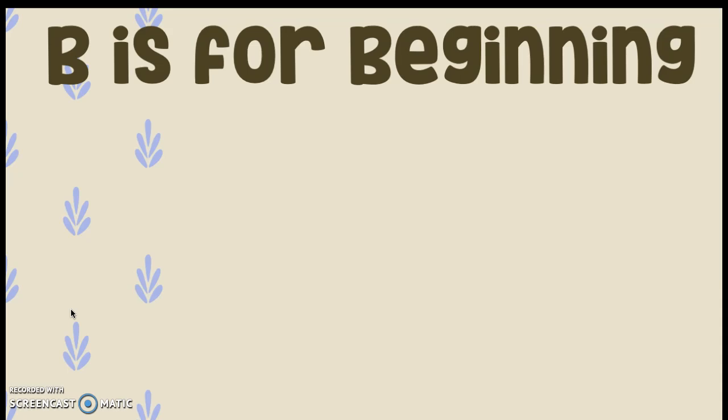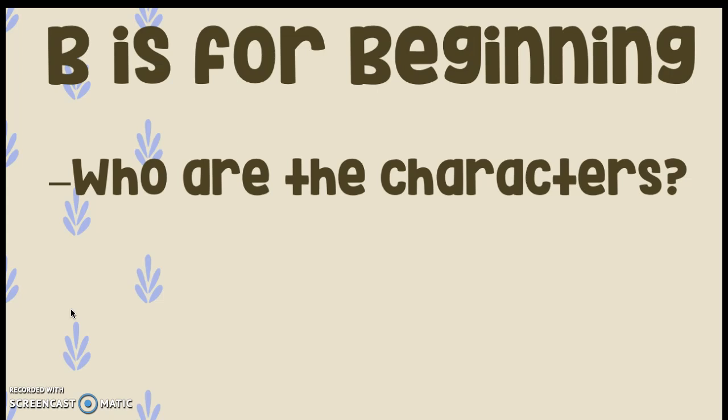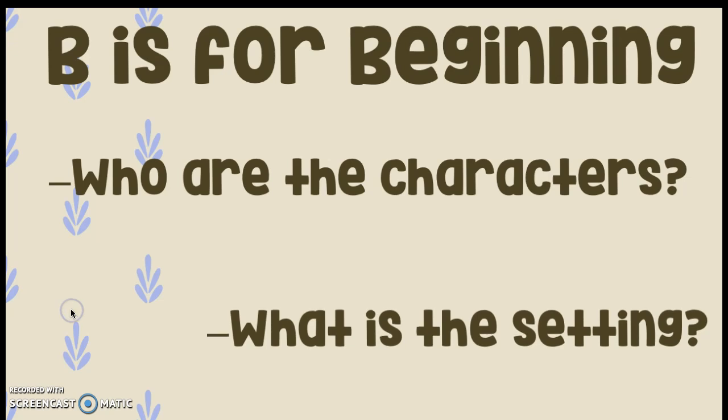B is for the beginning. The beginning of a story is really important — it does two things. It tells you who the characters are. When you first start reading a story, you don't know who's going to be in the book, so the beginning introduces the characters for the very first time. It also tells you what the setting is — when and where the story is taking place. The beginning kind of sets up the story.